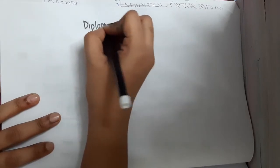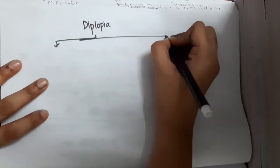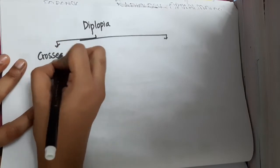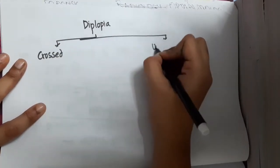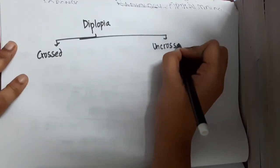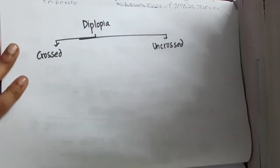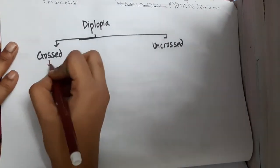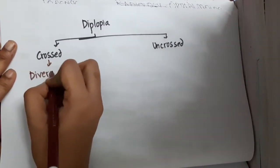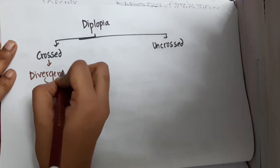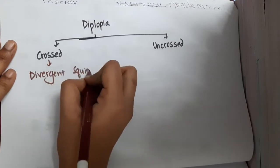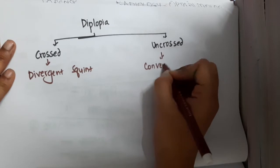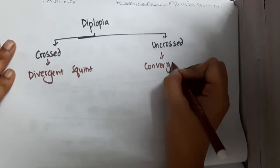In diplopia you have two different types. One is crossed diplopia and second is uncrossed diplopia. Crossed diplopia is seen in divergent squint, whereas uncrossed diplopia is seen in convergent squint.